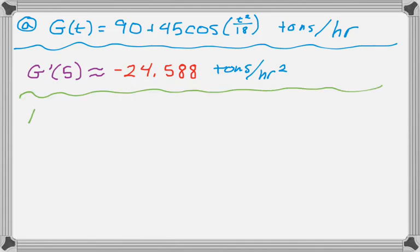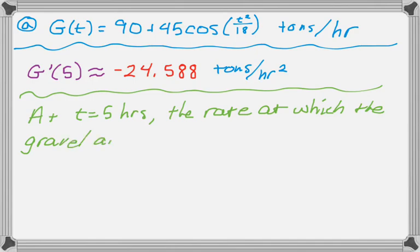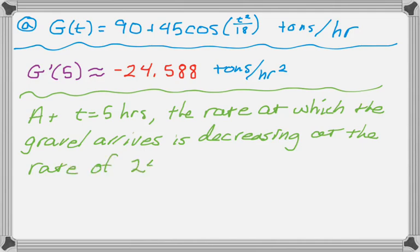And then we need to interpret it. So, at T equals 5 hours, the rate at which unprocessed gravel arrives is decreasing at the rate of 24.588 tons per hour squared.